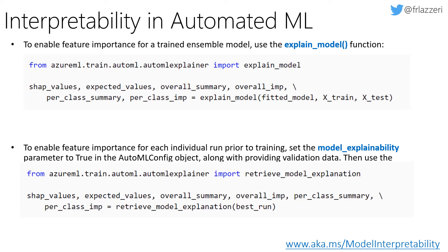In order to enable feature importance for each individual run prior to training, you can set the model_explainability parameter to true in your AutoML config object, along with providing the validation data. This is very important if you want to use interpretability toolkits with your machine learning and automated machine learning models.